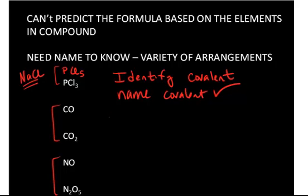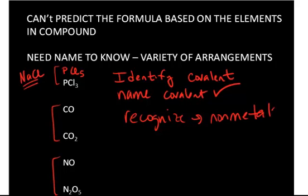At this point, you just need to be able to recognize whether a compound is covalent or ionic. You'll recognize it based on whether the compound is completely composed of nonmetals. If it is, then chances are that compound is covalent, and it's going to follow a different naming system that you'll learn in the next learning module.